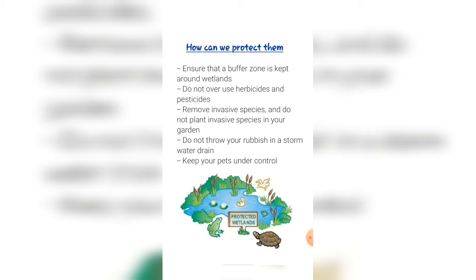Do not plant invasive species in your garden, because these invasive species could spread to wetlands. Do not throw your rubbish in a stormwater drain. Most stormwater drains lead to some sort of wetland. If you throw your rubbish on a street or in a stormwater drain, it could end up in a wetland.